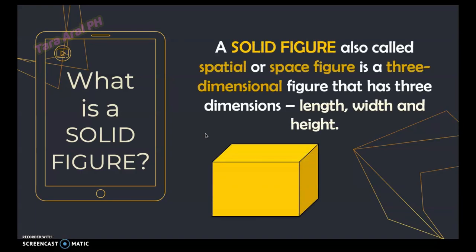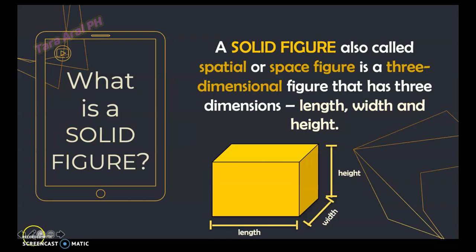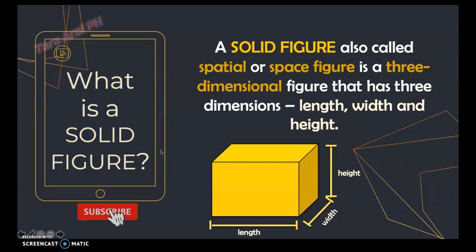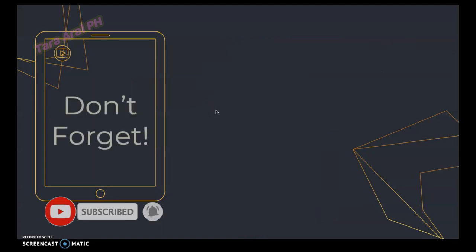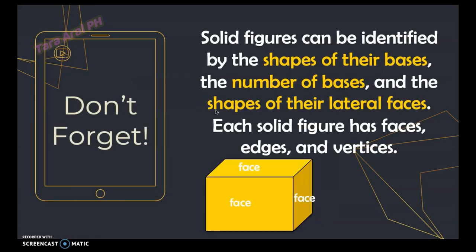A solid figure is called a spatial or space figure, which is a three-dimensional figure that has three dimensions: length, width, and height. It can also be called a geometric shape. Solid figures can be identified by the shapes of their bases, the number of bases, and the shapes of their lateral faces.